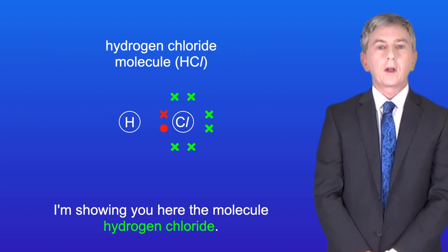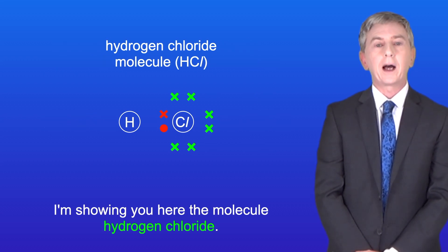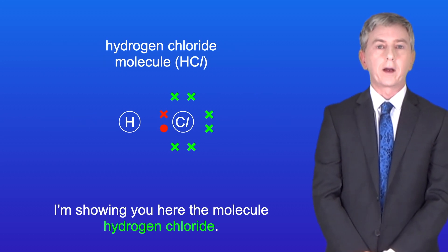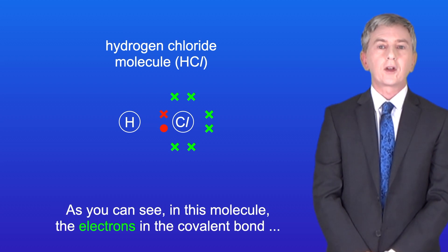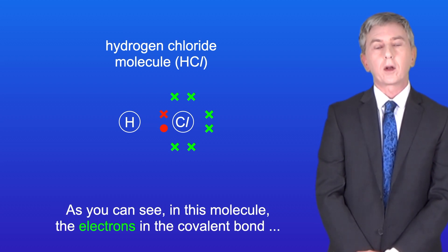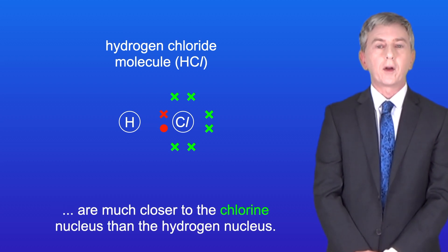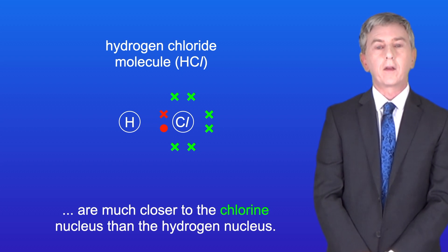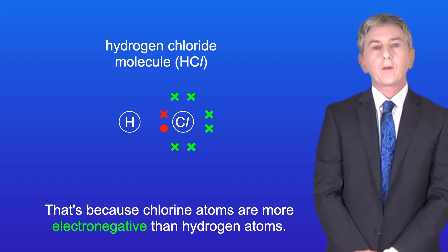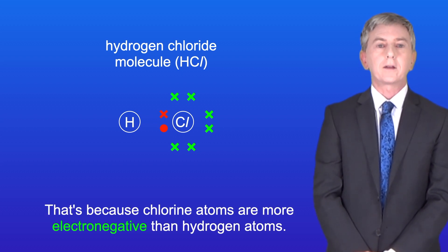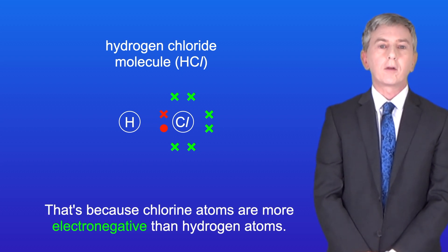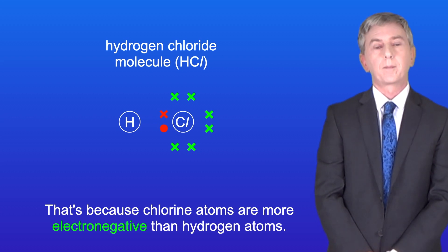Here I'm showing the molecule hydrogen chloride. As you can see in this molecule, the electrons in the covalent bond are much closer to the chlorine nucleus than the hydrogen nucleus. That's because chlorine atoms are more electronegative than hydrogen atoms.